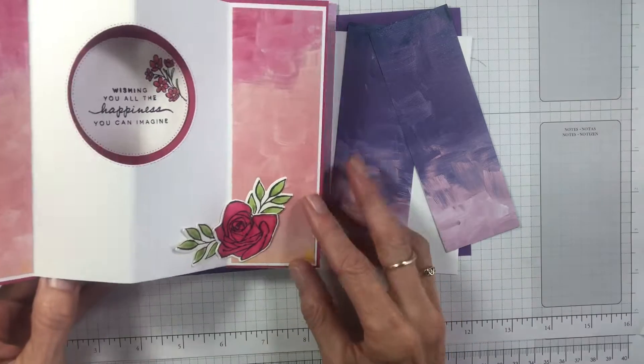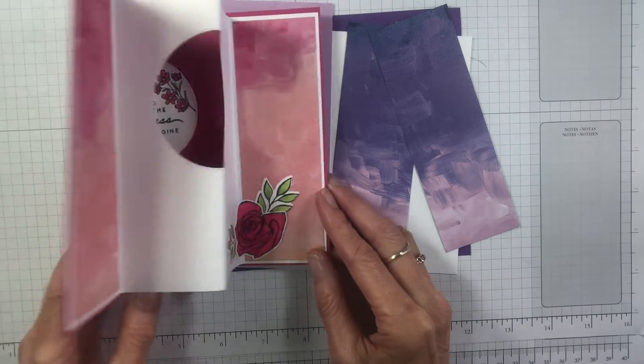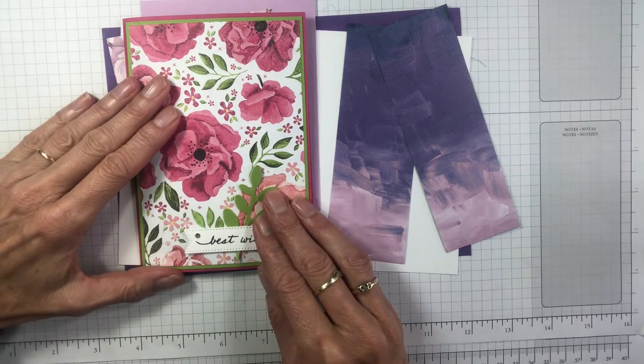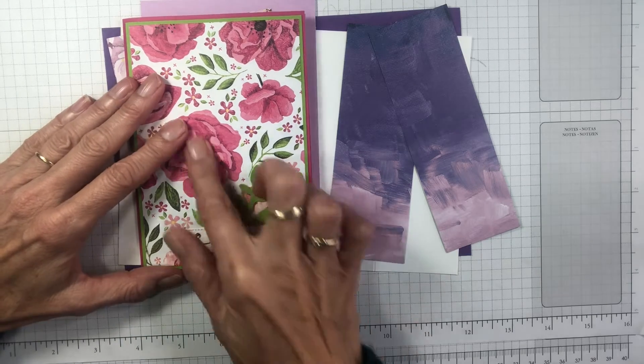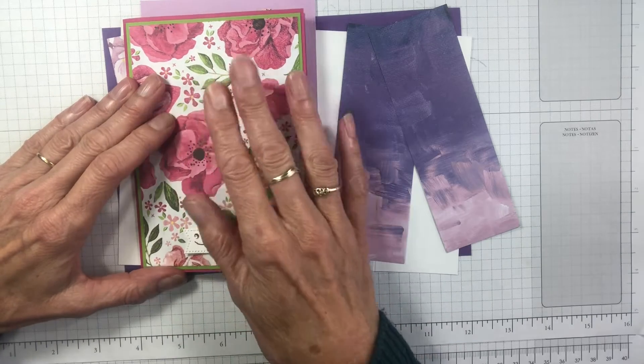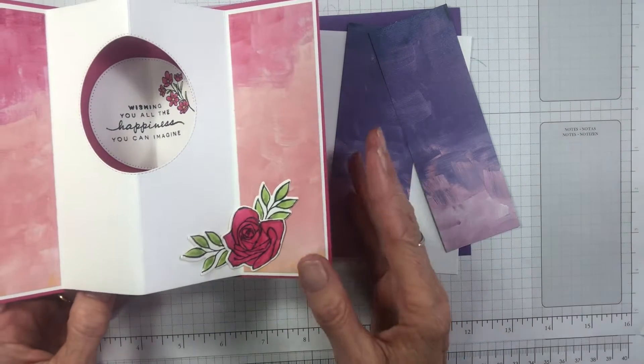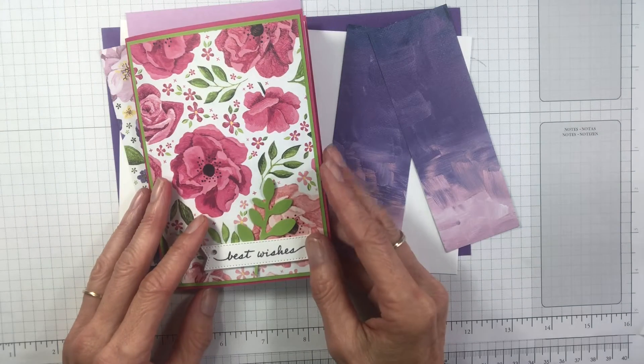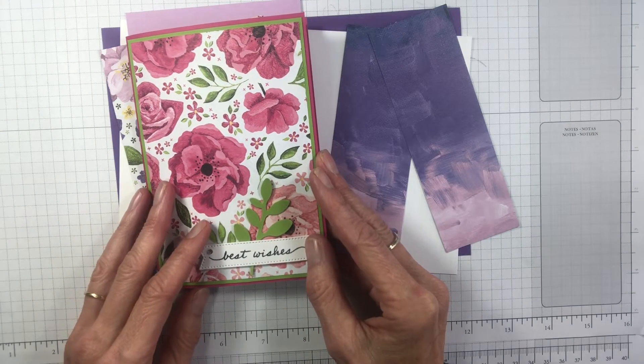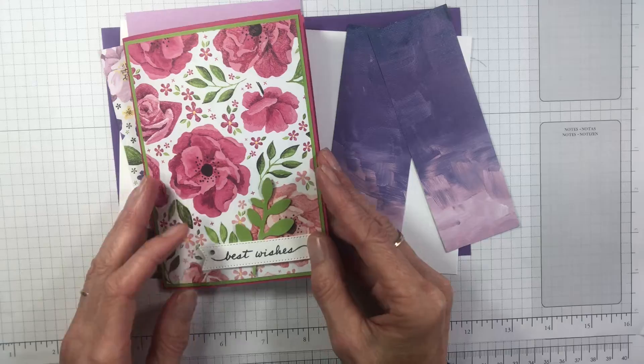So here is our tunnel card. I have used the gorgeous Hues of Happiness Suite and this beautiful paper. Isn't it just so lovely? I'm going to show you how to make it. Don't stress too much about the measurements. I'll add those on my blog later so you'll be able to catch those.